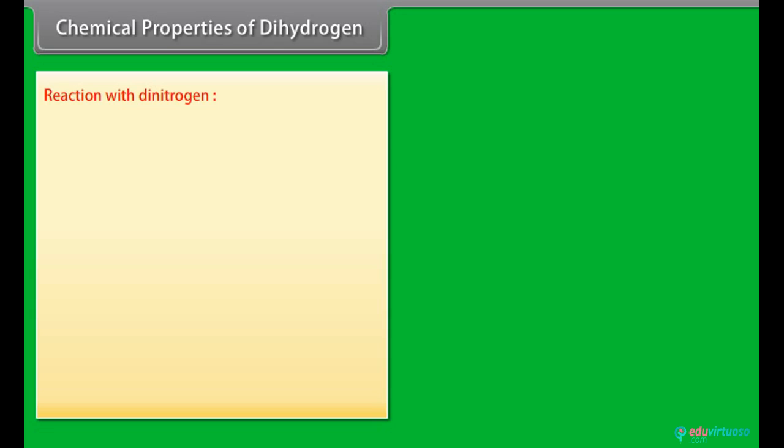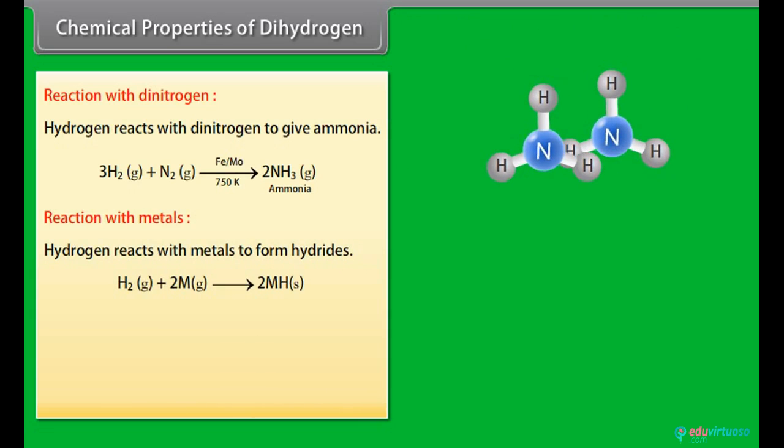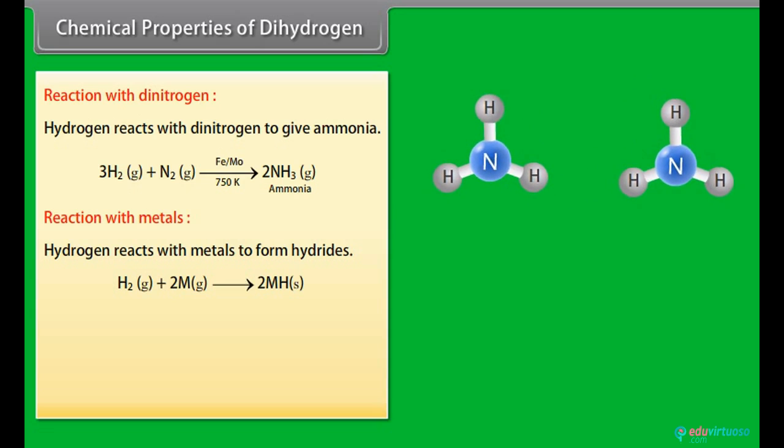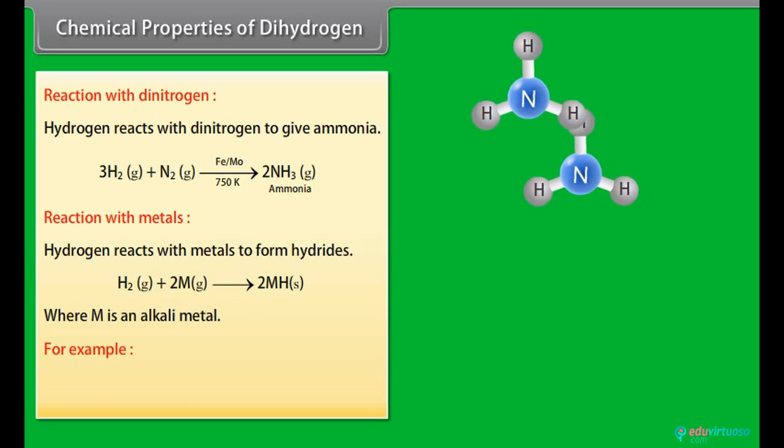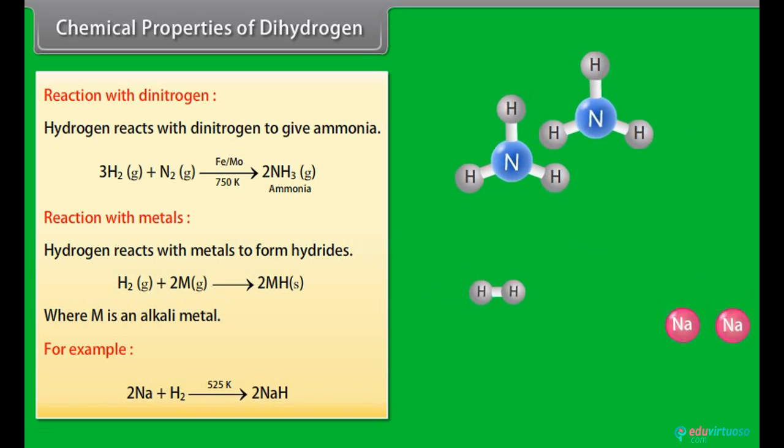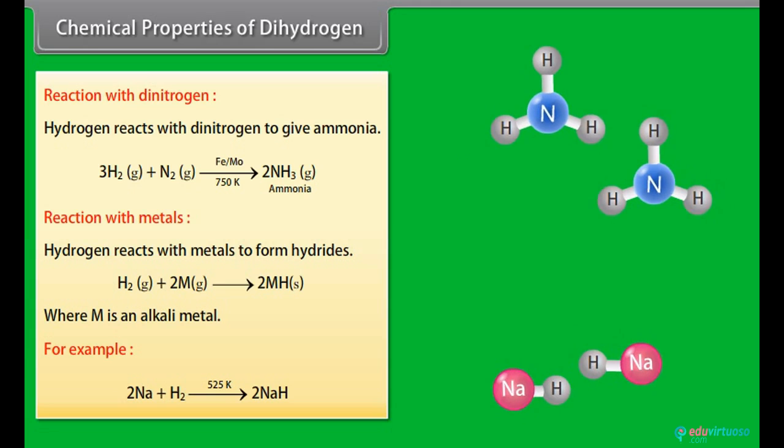Reaction with dinitrogen: Hydrogen reacts with dinitrogen to give ammonia. Reaction with metals: Hydrogen reacts with metals to form hydrides where M is an alkali metal. For example, 2 Na plus H2 on temperature 525 Kelvin gives 2 NaH.